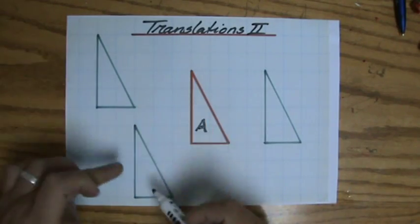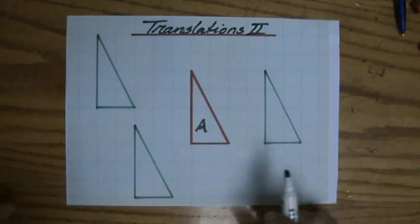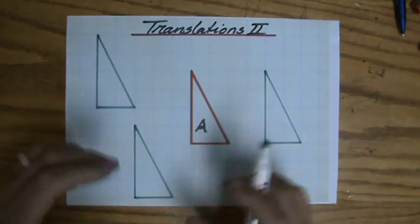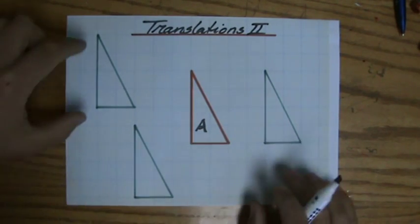And I have three images after a particular translation. The question is, what is the column vector which belongs to each translation? So I have three of them. What is the column vector belonging to it? Well, let's do this one first.